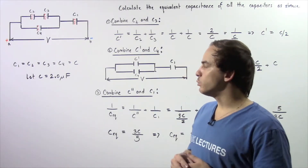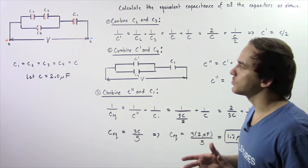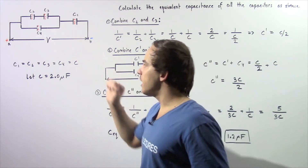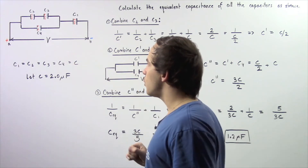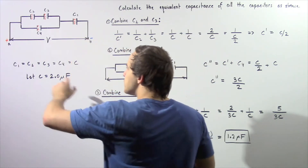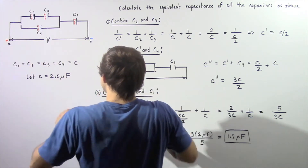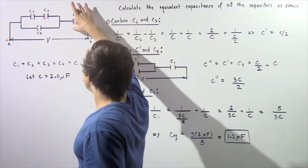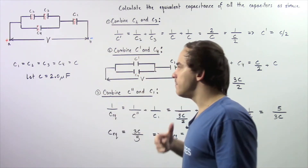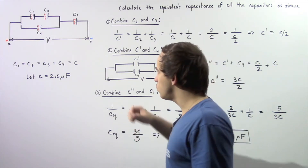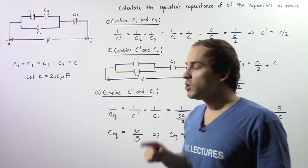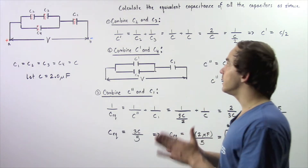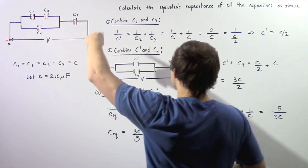Let's look at the following example dealing with electric circuits and capacitors. We'd like to calculate the equivalent capacitance of all the capacitors as shown in the diagram. We have a closed electric circuit with a lower potential, a higher potential, and a difference in potential resulting from a battery placed in the circuit. There are four capacitors, each with capacitance C equal to 2 microfarads.